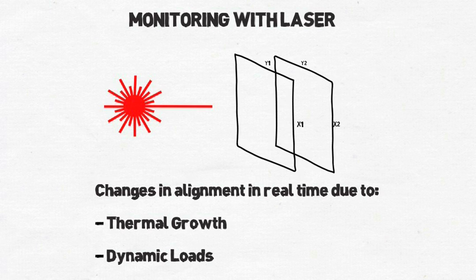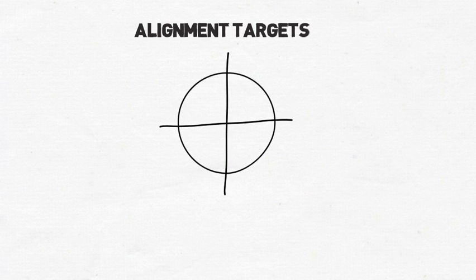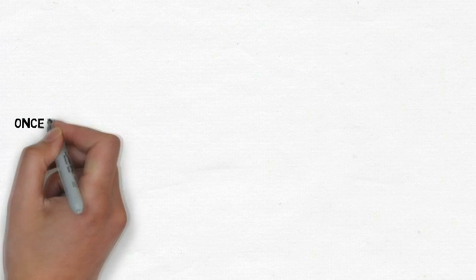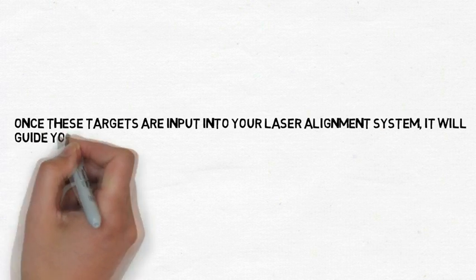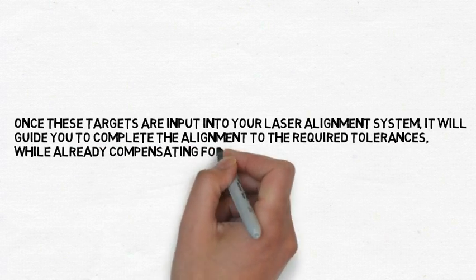Whichever method is chosen to obtain this data, it is desirable to deliberately misalign the two shafts by that specific amount in the opposite direction. This is known as target alignment. It should be expressed in both the vertical and horizontal planes as predicted movement at the bearings or as changes in offset and angularity at the coupling. Once these targets are input into your laser alignment system, it will guide you to complete the alignment to the required tolerances, allowing you to compensate for the anticipated machine thermal growth.